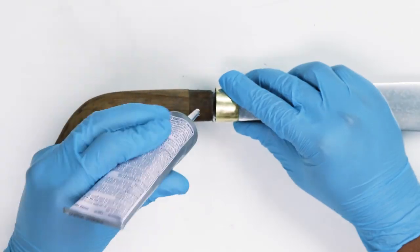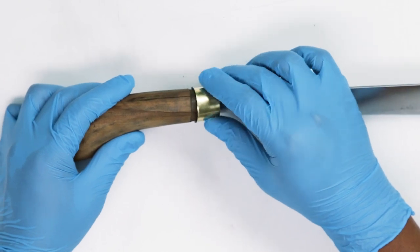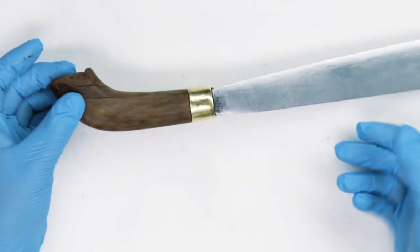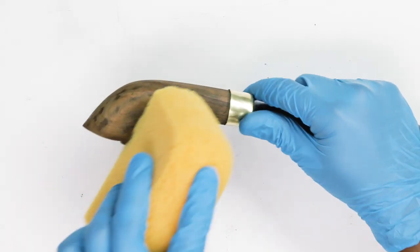To hold the brass piece in place I used industrial glue. I polished the handle with the same danish oil to match the sheath.